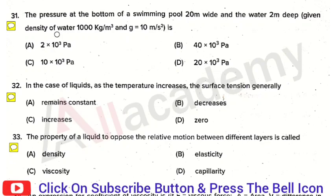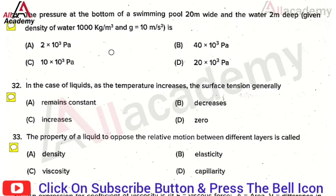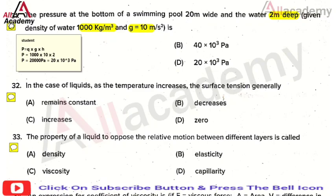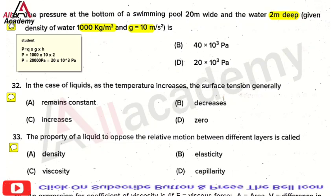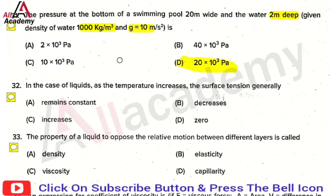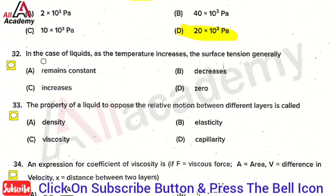The next question: the pressure at the bottom of a swimming pool 20 meters wide with water 2 meters deep — density of water is 1000 kg/m³ and g is 10 m/s². We need to calculate pressure at the bottom using P = ρgh. Here ρ = 1000, g = 10, h = 2 meters. Multiplying all together gives 20,000 pascal, which is 20×10³ pascal. The right answer is option D, that is 20×10³ pascal.